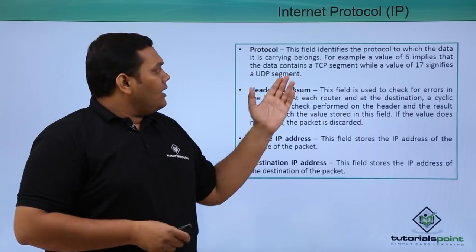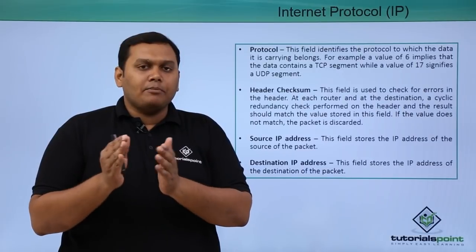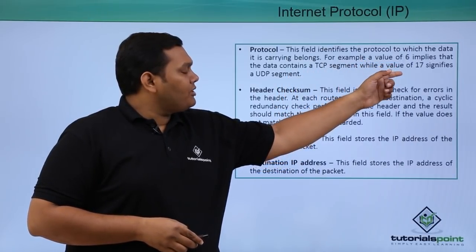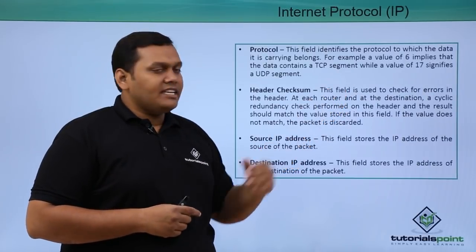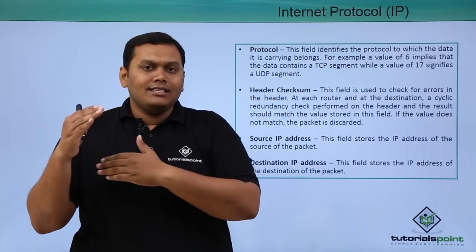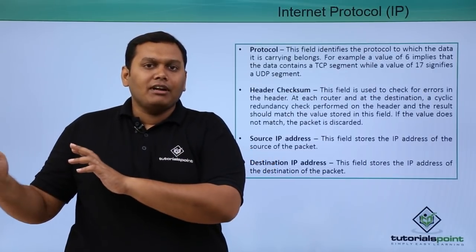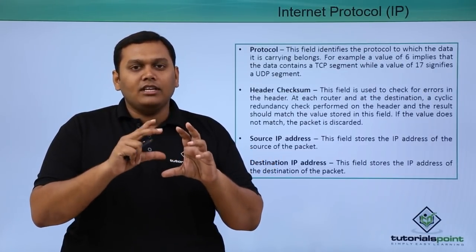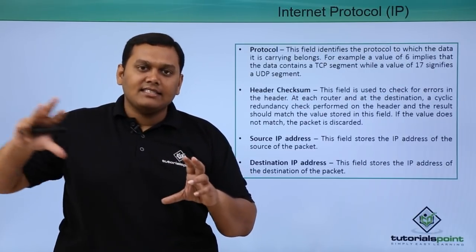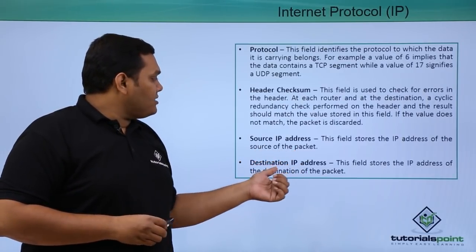The protocol field identifies the data-carrying protocol. For example, a value of 6 implies TCP and 17 signifies UDP. The header checksum field handles error detection — if data is transferred to the destination without an acknowledgement, it indicates an error. The checksum is assigned to the header, and the source retransmits the information until the destination acknowledges receipt.